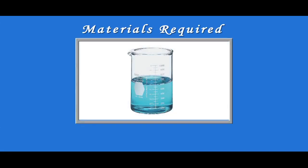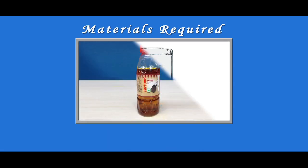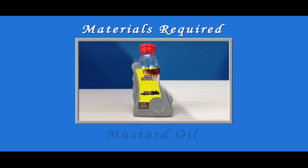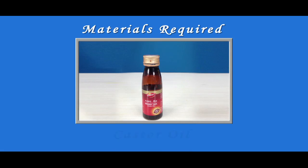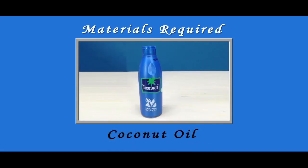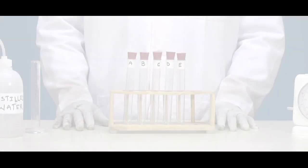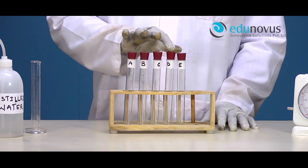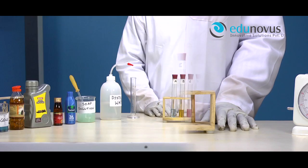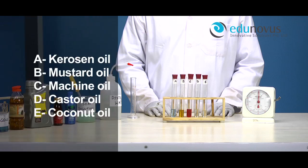Materials required are kerosene oil, mustard oil, machine oil, castor oil, and coconut oil. Take five clean and dry test tubes and name them A, B, C, D, and E. In each test tube, take 5 ml of a different oil: test tube A contains kerosene oil, B mustard oil, C machine oil, D castor oil, and E coconut oil.